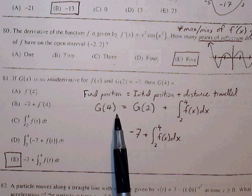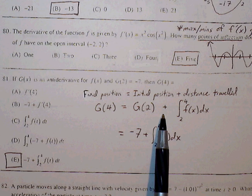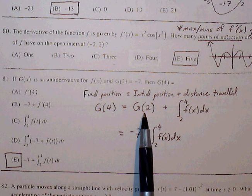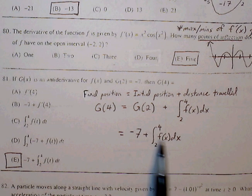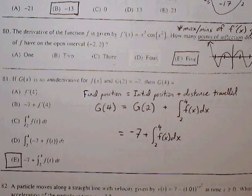So G of 4 is equal to G of 2 plus the definite integral from 2 to 4. And so I know G of 2 is negative 7, so then that matches answer choice E.